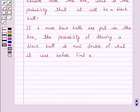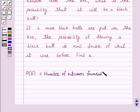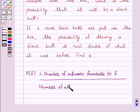Now we know that the probability of an event E is equal to number of outcomes favorable to E upon number of all possible outcomes of the experiment.